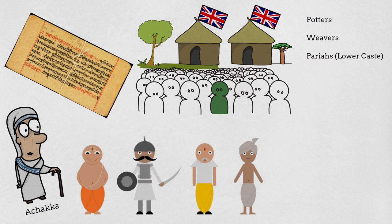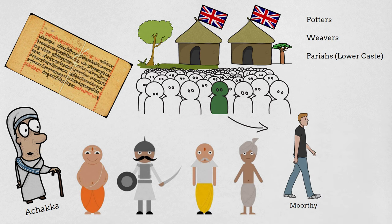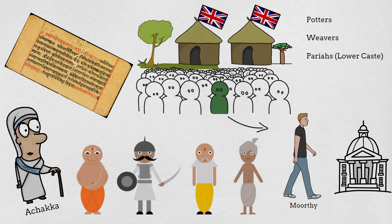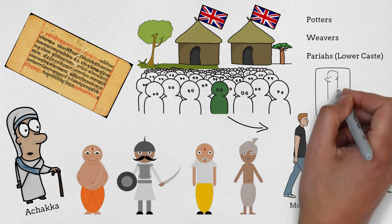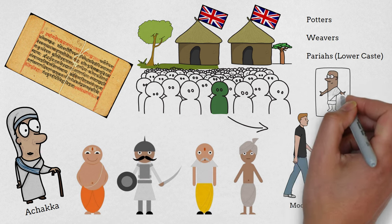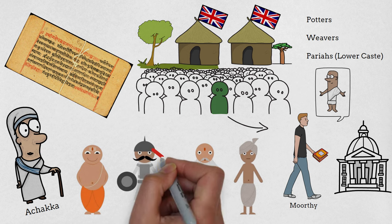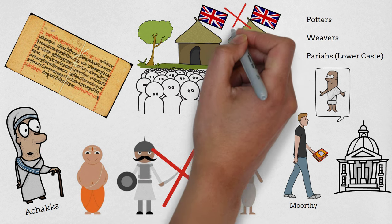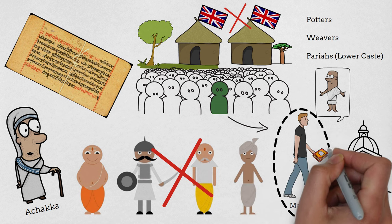Achakka is the narrator and the protagonist of her story is Moorthy, who leaves the village and goes to a city for university education. Moorthy develops an interest in philosophy, studies the philosophical teachings of Mahatma Gandhi, and becomes an activist. As Gandhi was against the caste system and the Britishers, Moorthy too started following the same footsteps.